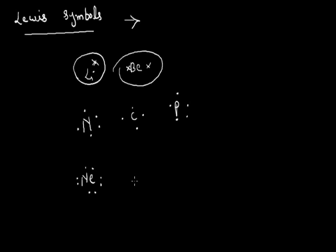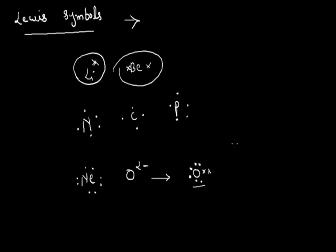Now we will discuss Lewis Symbols for ions, like O2-. The Lewis Symbol of neutral oxygen shows six valence electrons. In the case of O2-, it accepts two more electrons, giving eight dots total. That is the Lewis Symbol of O2-.